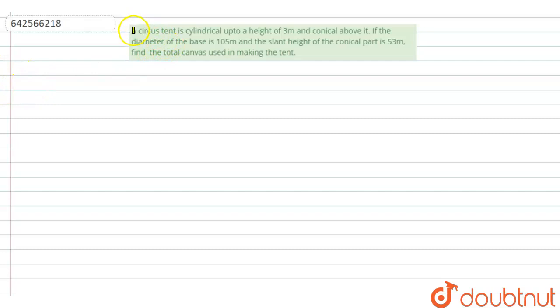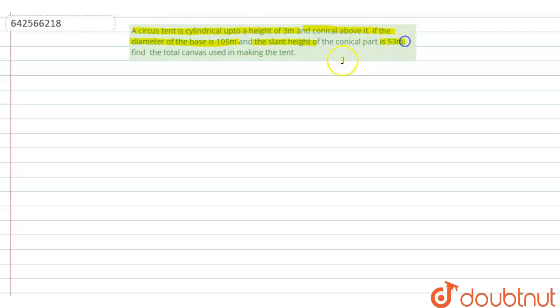The question says that a circus tent is cylindrical up to a height of 3 metres and conical above it. If the diameter of the base is 105 metres and the slant height of the conical part is 53 metres, find the total canvas used in making the tent.